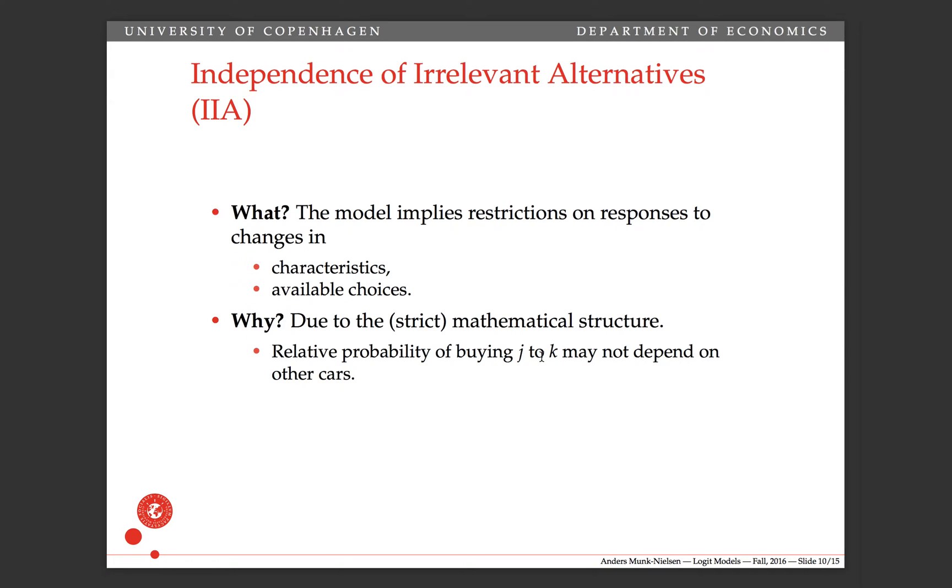The relative probability of buying a Tesla relative to a BMW does not depend on the characteristics of a tiny Skoda or some crappy car. This may be relevant for some alternatives, but in particular it means it doesn't depend on the alternatives close as well. So the probability of Tesla relative to the probability of BMW doesn't depend on what the characteristics of, say, some other nice car like a Ferrari looks like. And that might not be as realistic. I'll show you precisely how it works.